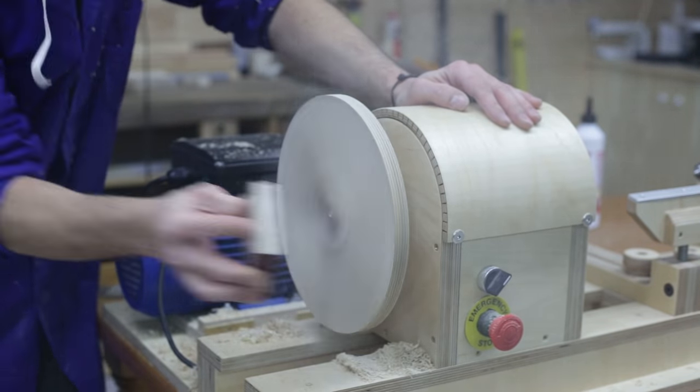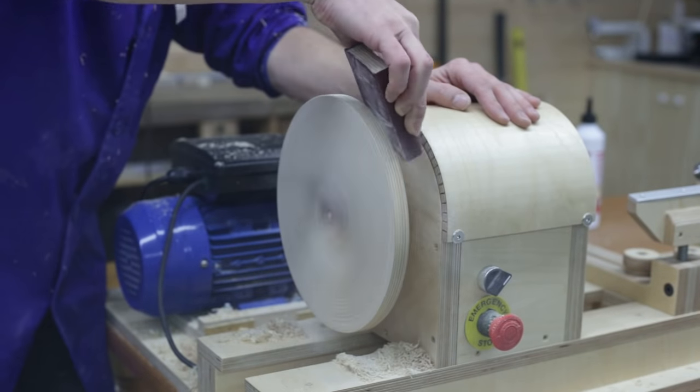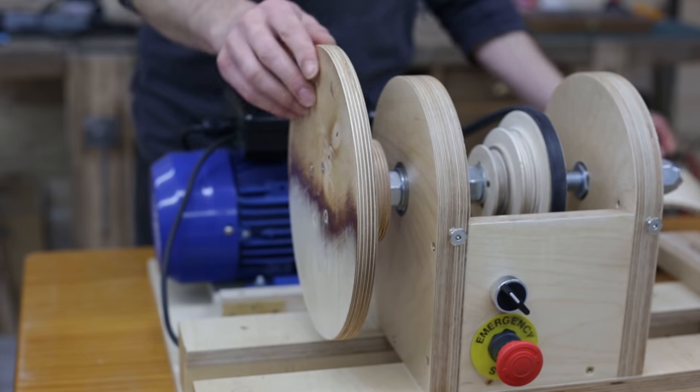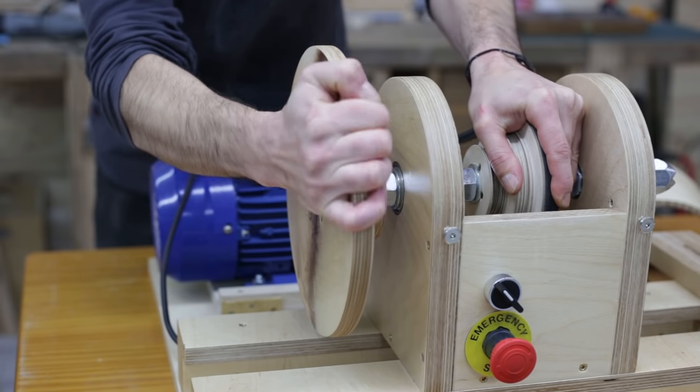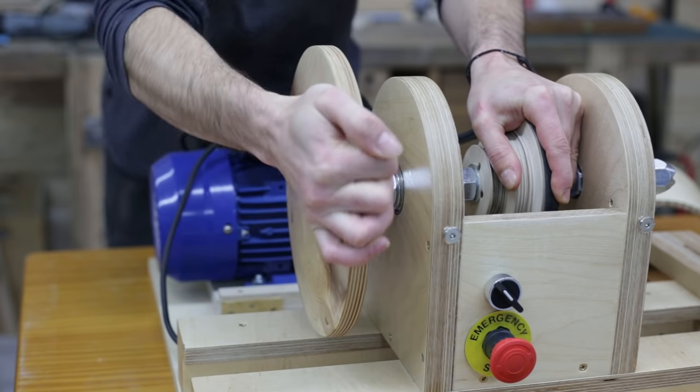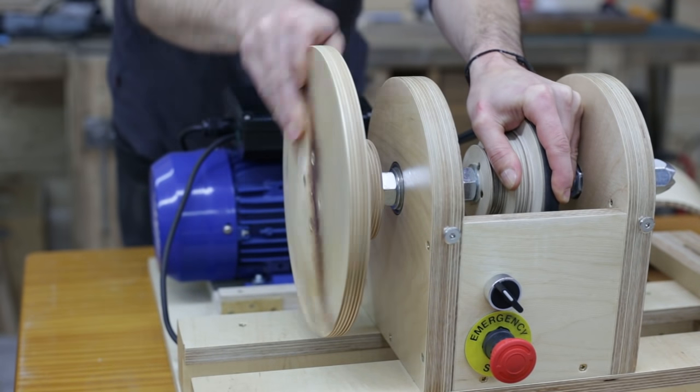Now I'll sand the edges of the disc for safety reasons. As you can see, tightening and loosening the disc on the threaded rod offers a fair amount of resistance.